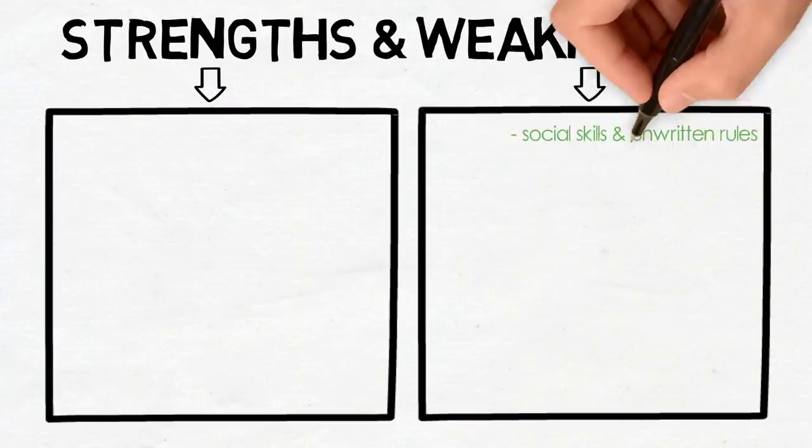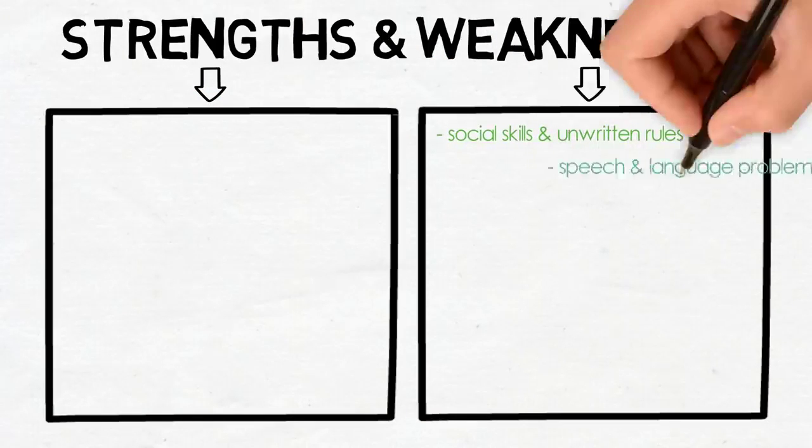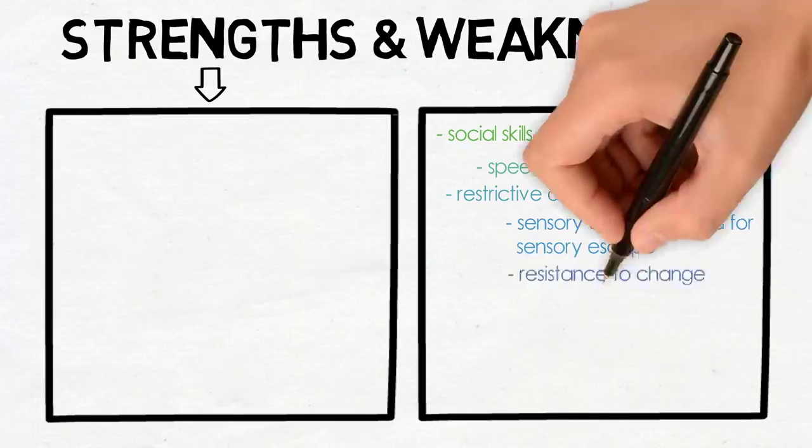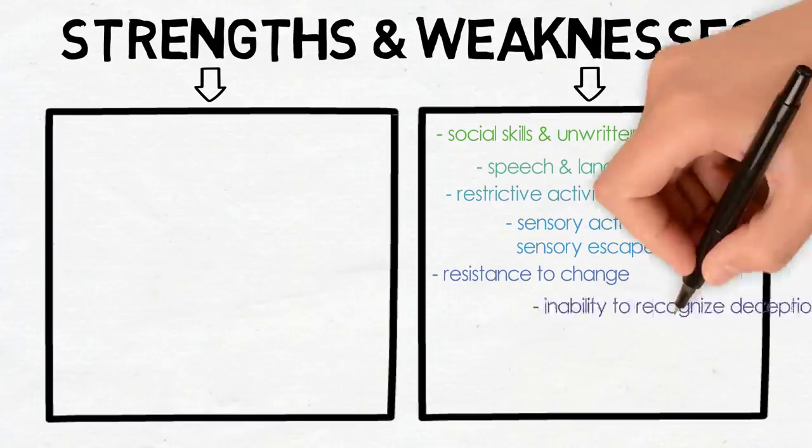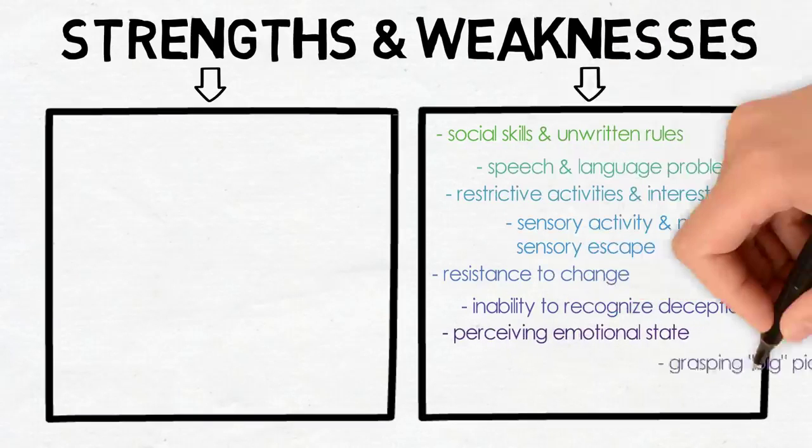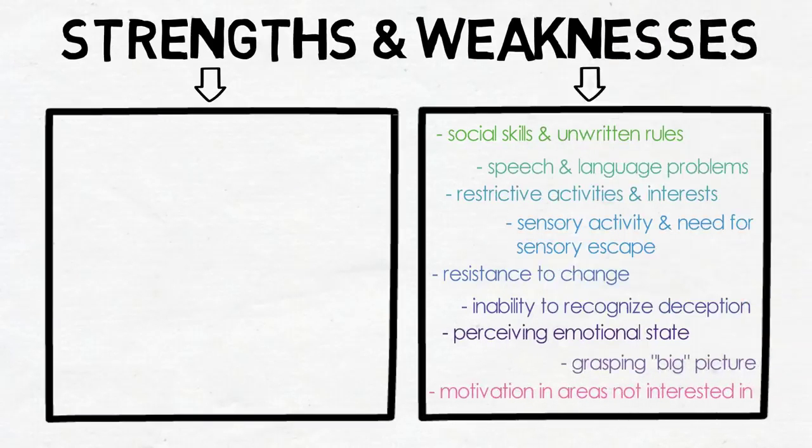Social skills and unwritten rules of social interaction, speech and language problems, restrictive activities and interests, sensory activity and the need for sensory escape, resistance to change, inability to recognize deception and comply with social norms, perceiving emotional state, grasping the big picture, and motivation in areas that are not points of interest.